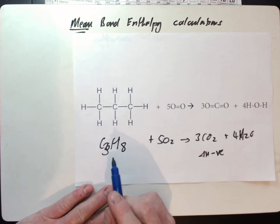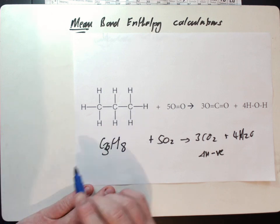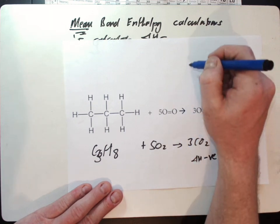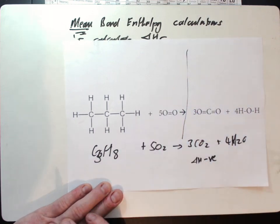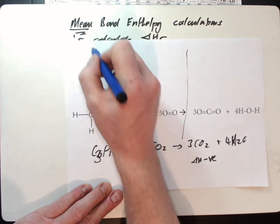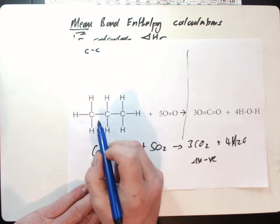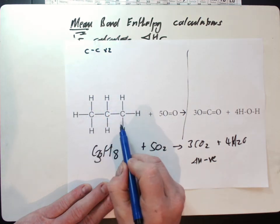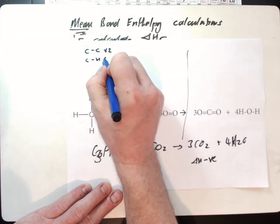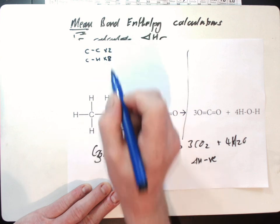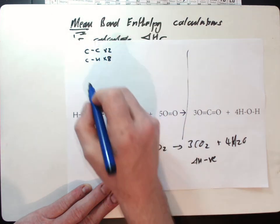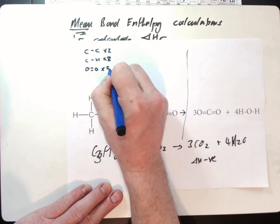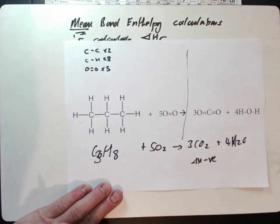Then what I would do is get your table here, and we find out and make a list of what bonds we're making and breaking. Here we have C-C bonds, and we have two of them. We have C-H bonds, we have eight of them. We have oxygen bonds, O=O double bond, we have five of them.